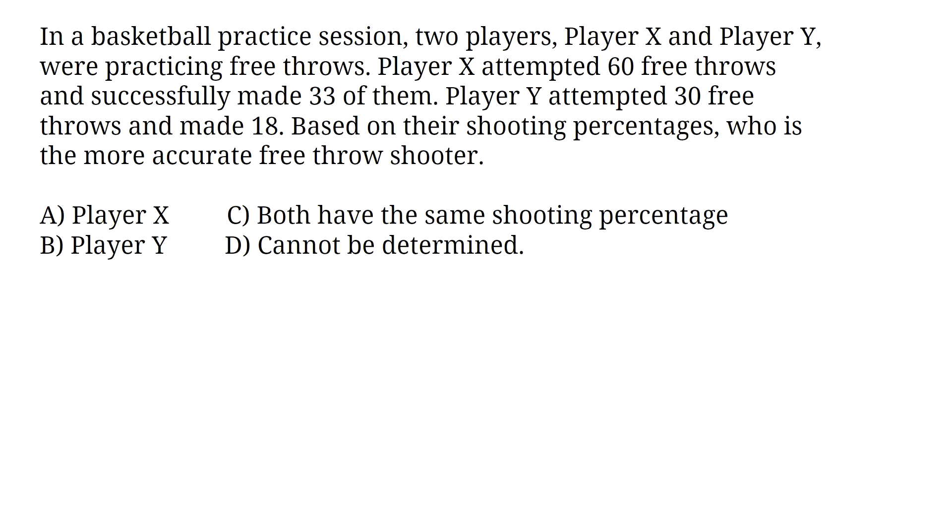In a basketball practice session, two players, Player X and Player Y, were practicing free throws. Player X attempted 60 free throws and successfully made 33 of them. Player Y attempted 30 free throws and made 18. Based on their shooting percentages, who is the more accurate free throw shooter? A. Player X. B. Player Y. C. Both have the same shooting percentage. D. Cannot be determined.